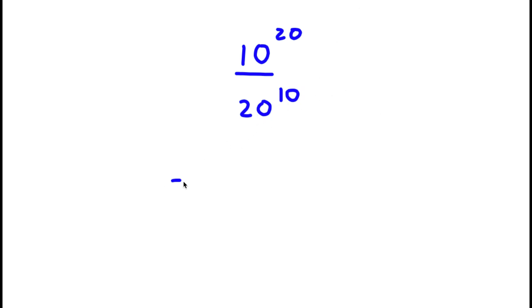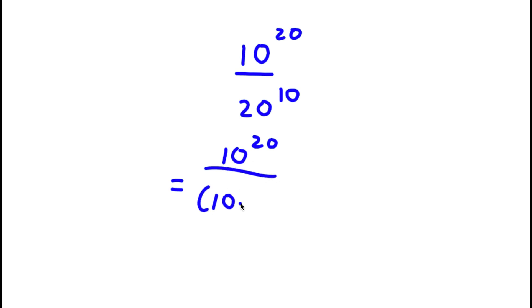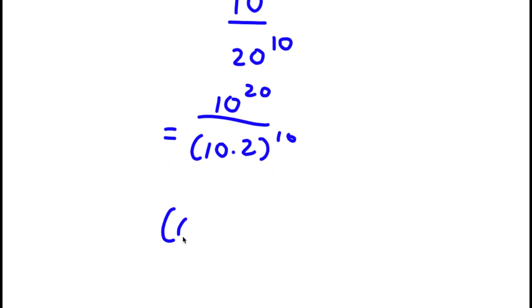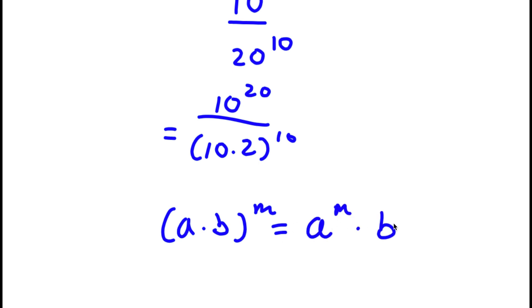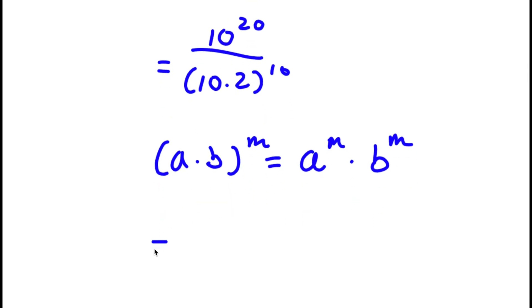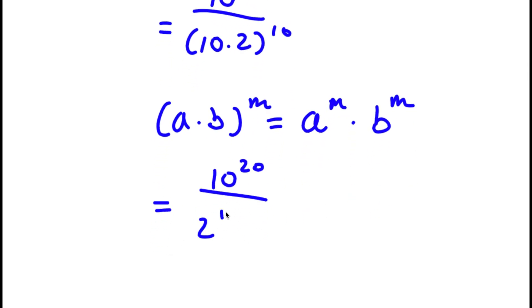So 20 here I can rewrite as 10 times 2. So now I have 10 to the power of 20 over 10 times 2 to the power of 10. And if I have something in the form a times b to the power of m, this is equal to a to the power of m times b to the power of m. So in this case this is going to equal 2 to the power of 10 times 10 to the power of 10.